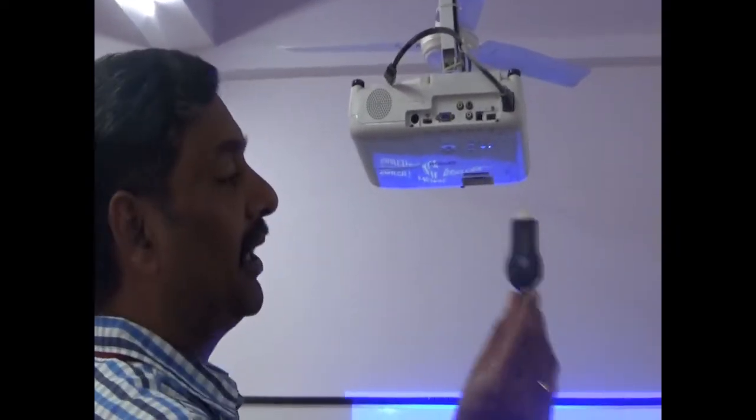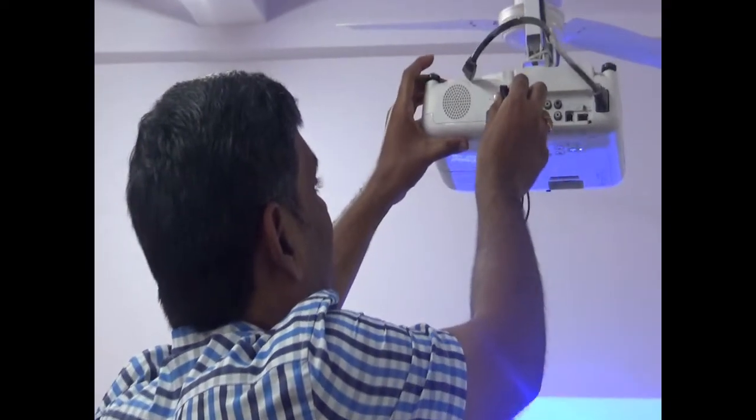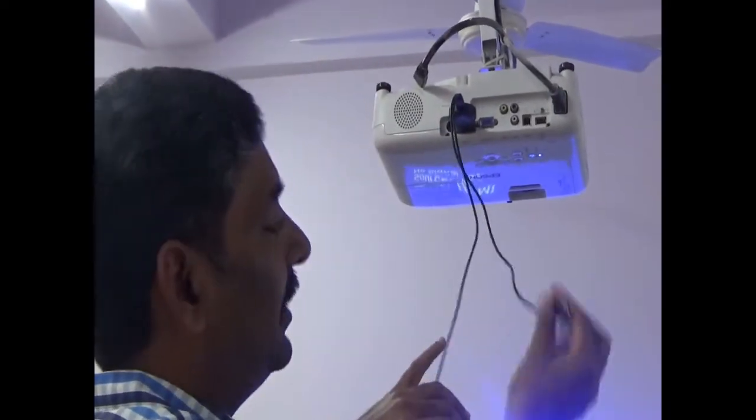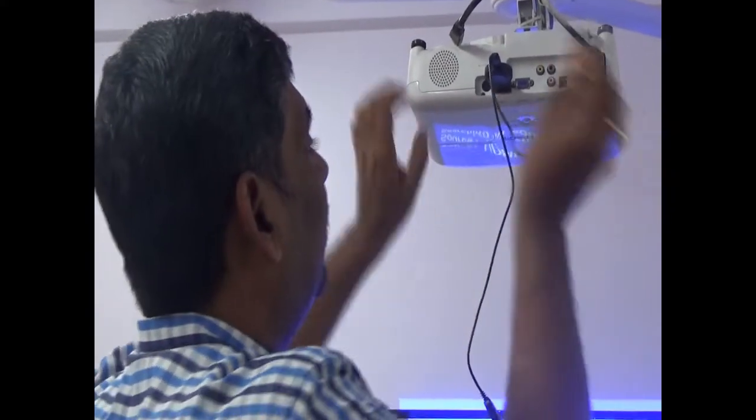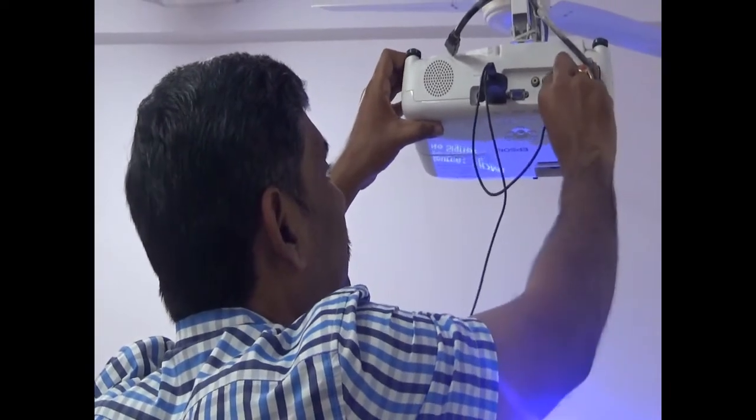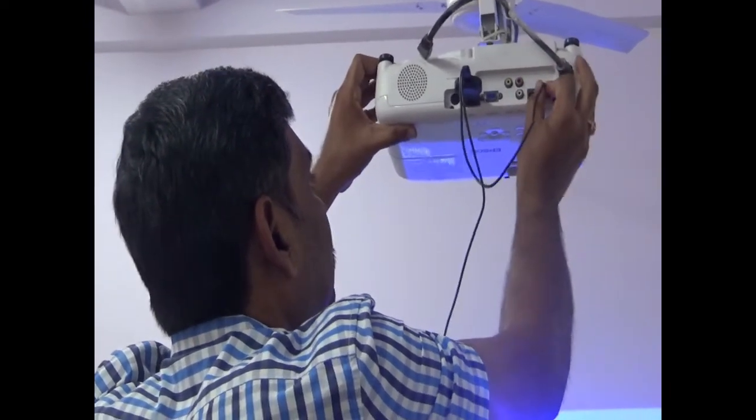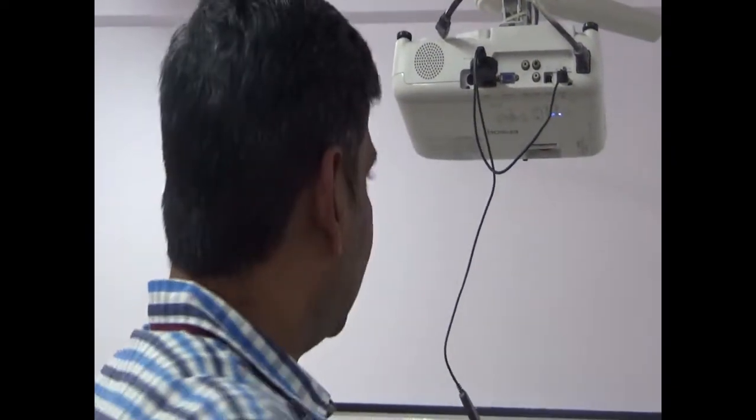So I am putting this HDMI pin into the HDMI slot of my projector, and then to power this device, I am connecting the USB pin to the USB slot over here and attaching this antenna.